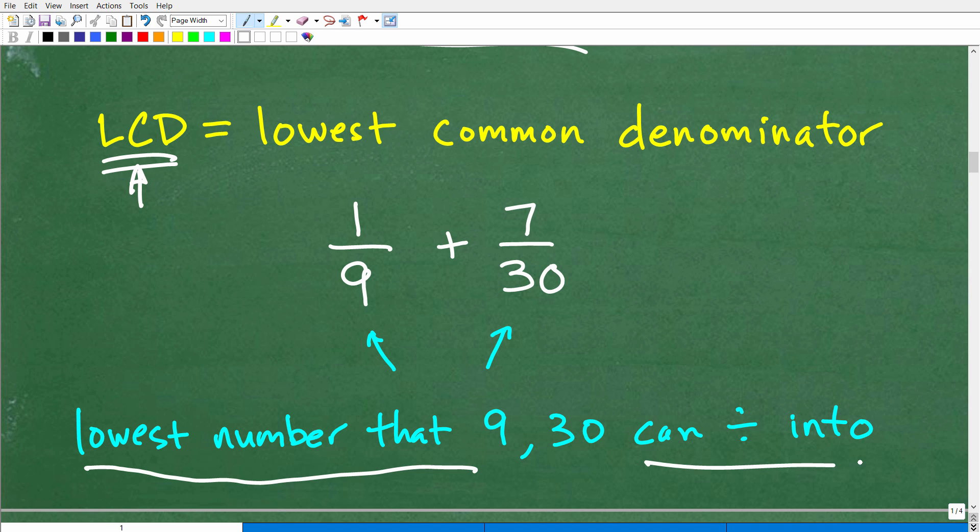A good way a lot of students think about the LCD is: the lowest common denominator is the lowest number that both of these numbers can divide into evenly without a remainder. So you're thinking to yourself, I'm looking for a number such that both 9 and 30 can divide into without a remainder. For example, if you had one third plus two fifths, what's the LCD? Probably all of you know it's 15. You're thinking, what's the lowest number that both 3 and 5 can divide into without having a remainder?